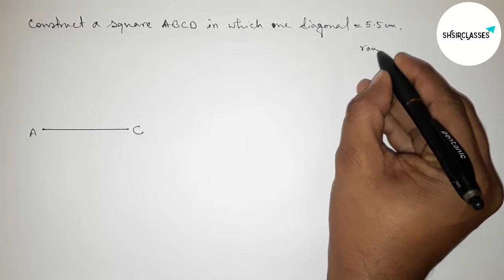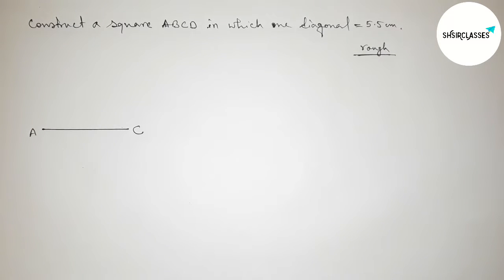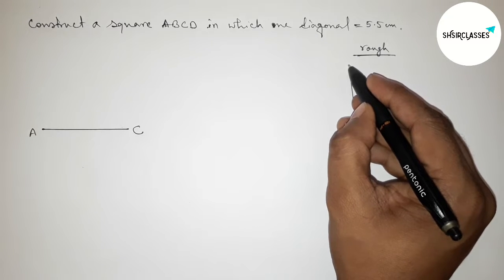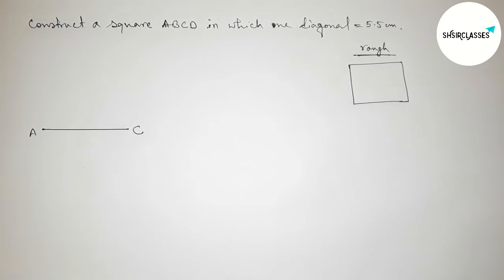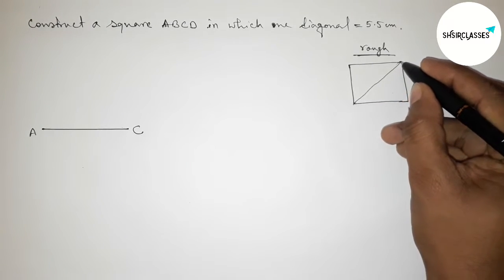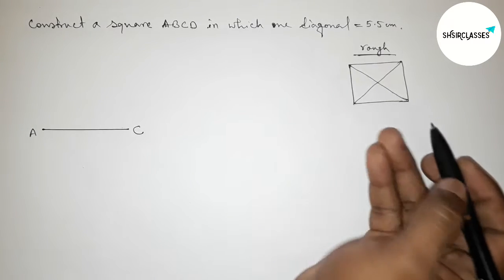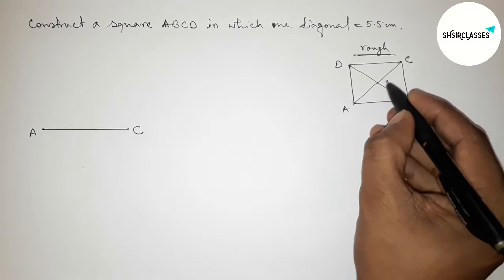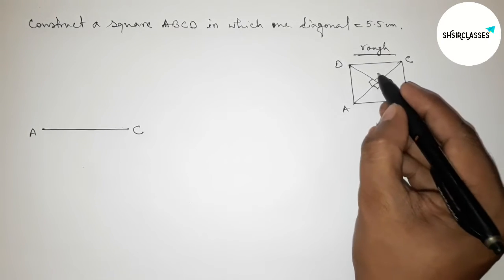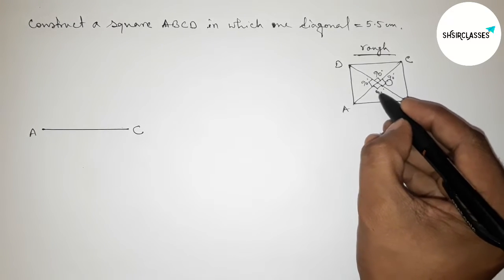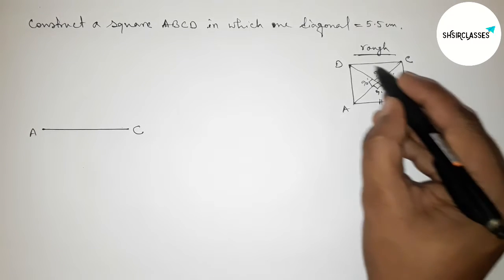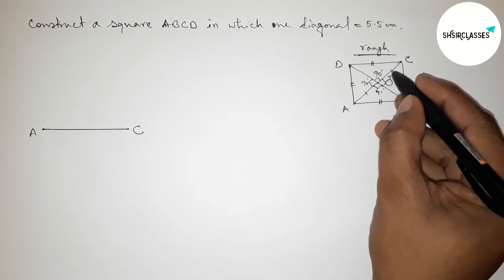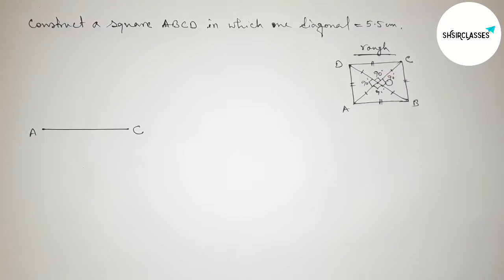Let's roughly discuss some important properties of a square. Drawing a square roughly and joining both diagonals — the two diagonals intersect at point O and bisect each other perpendicularly, so all angles at O must be 90 degrees. Also, all sides of a square are equal.